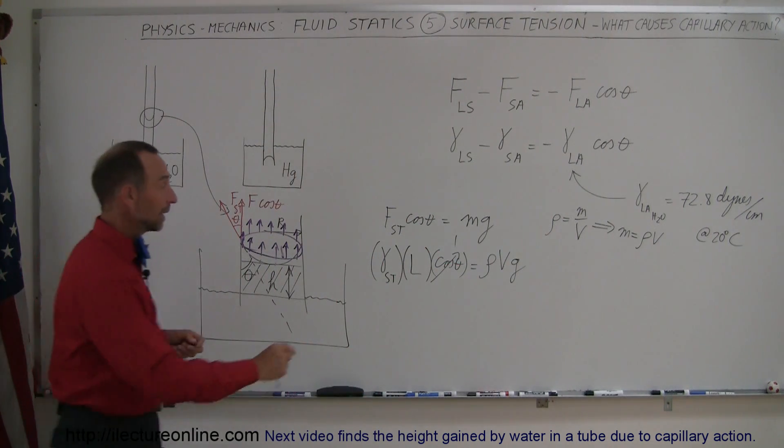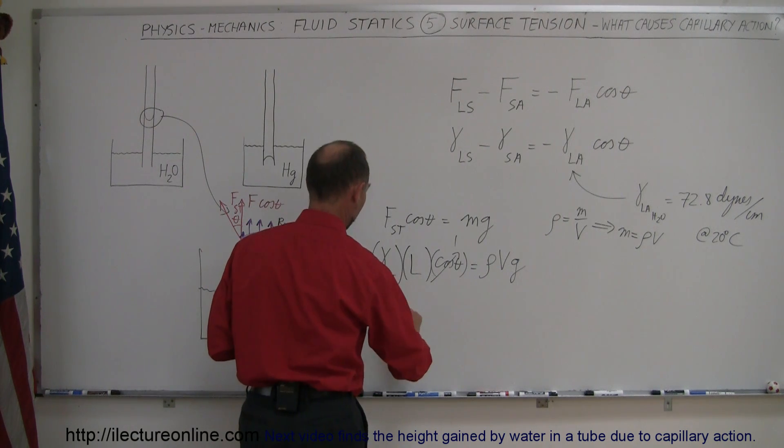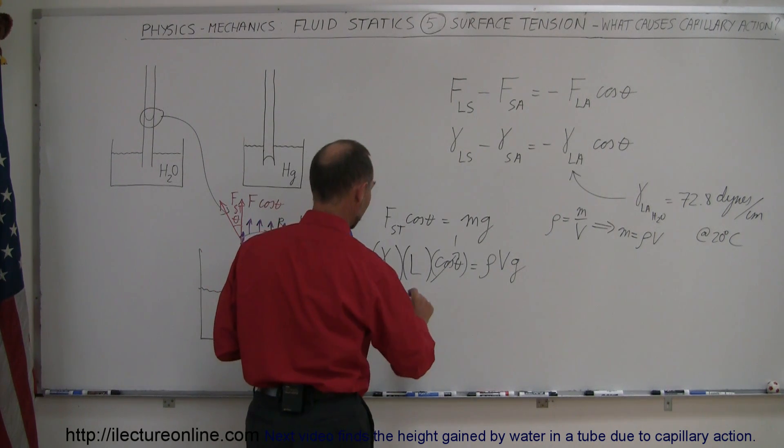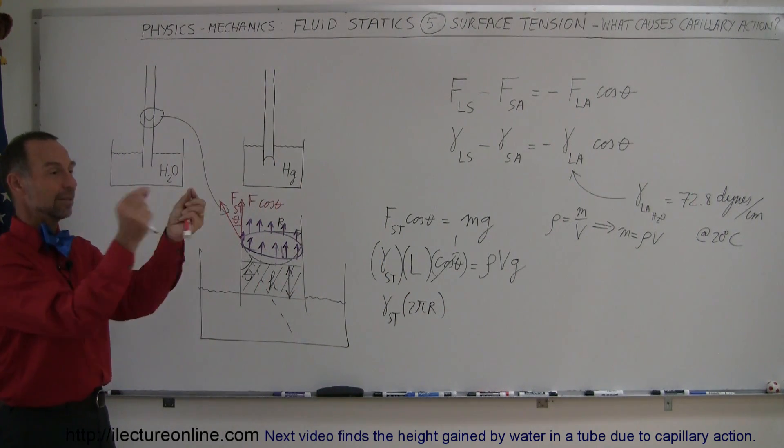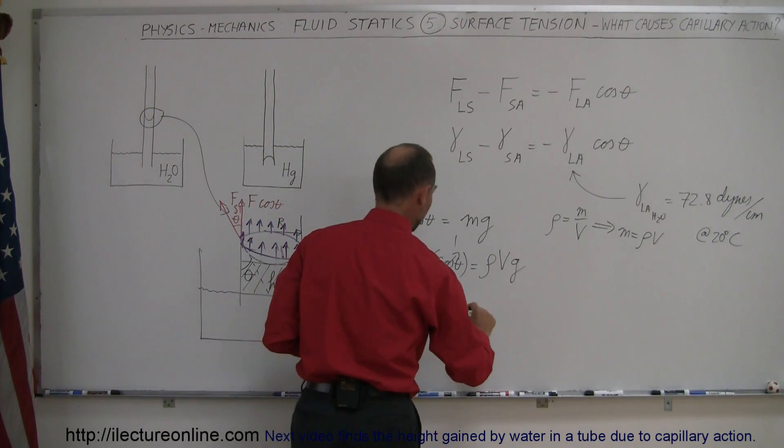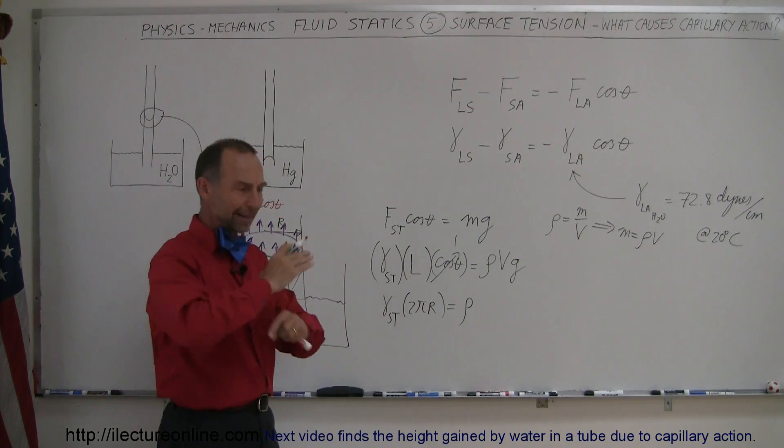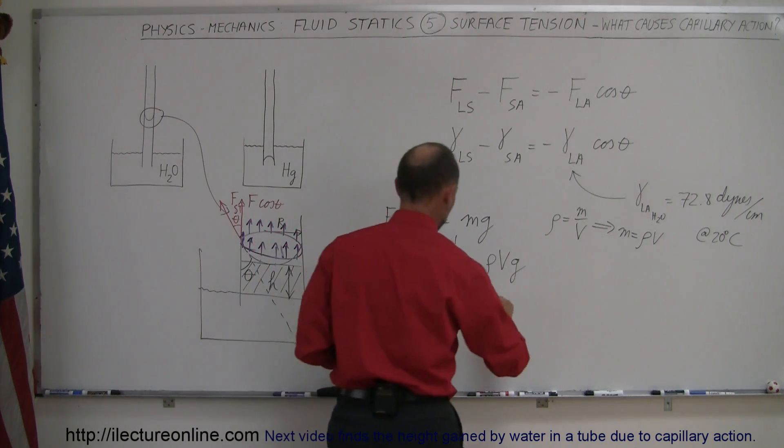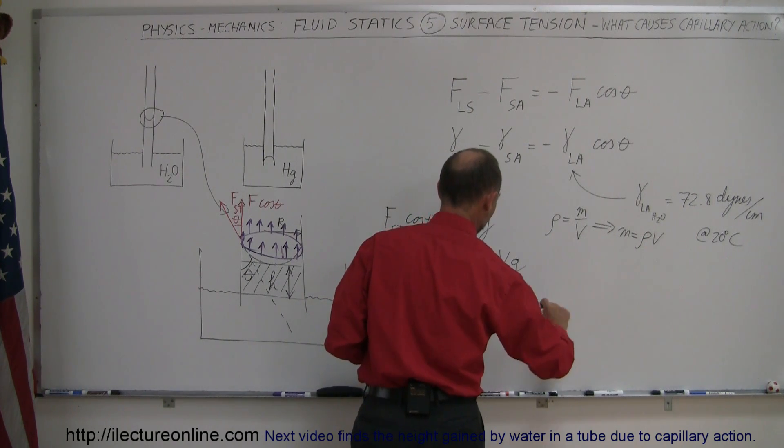So now plugging in what the length is equal to and what the volume is equal to, we get the following. So the coefficient of the surface tension times 2 pi r, which is the total circumference of the tube, that's the contact length between the water and the edge of the glass, is equal to the density of water times the volume. Now the volume would be the height times the cross-sectional area. That would be pi r squared for the cross-sectional area times the height times g.